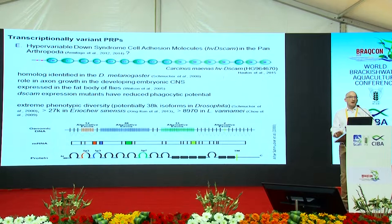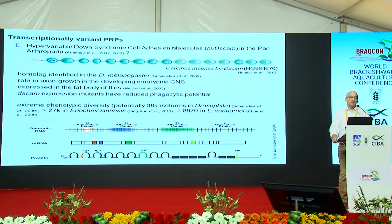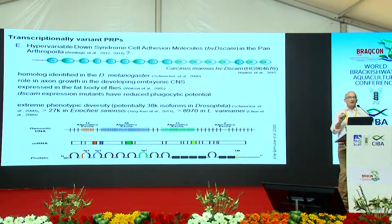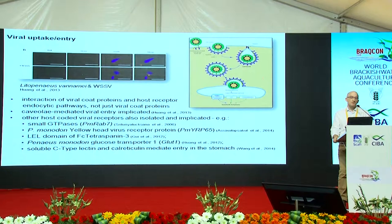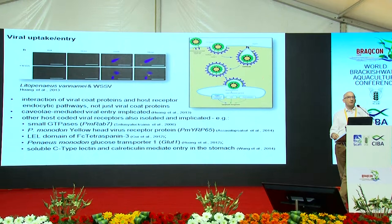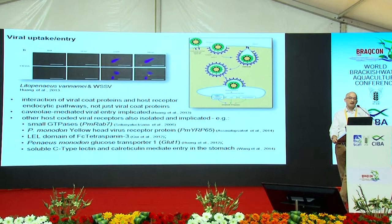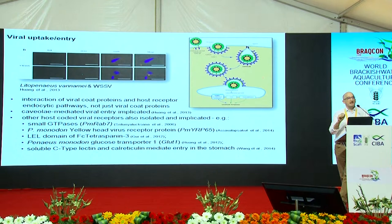Quite excitingly, we have evidence of hyper-variable receptors for bacterial detection such as DSCAM, which has been found in Drosophila, white shrimp, and many crabs including the European shore crab. These hyper-variable receptors potentially give really fine specificity in the detection of pathogens and might allow specific responses for which we previously had no mechanism. Mostly we're concerned with viruses in aquaculture, and here we have a growing appreciation of receptor pathways — how viruses interact with and bind to host cells, gaining entry through clathrin-mediated uptake or caveoli pits.